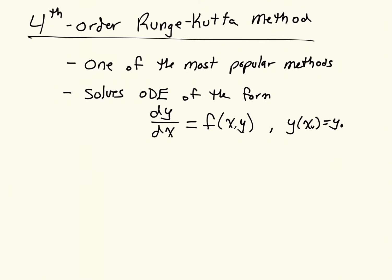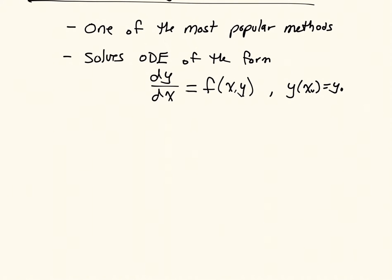This method is a fourth-order method, which means the error will decrease with the step size raised to the fourth power, so it will converge very quickly. And it has an update that has four sub-steps.